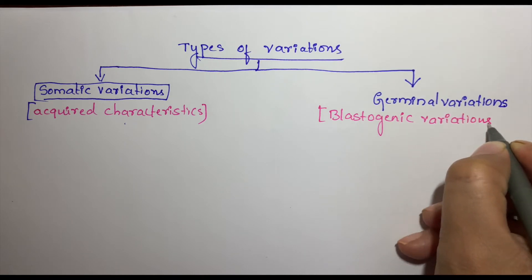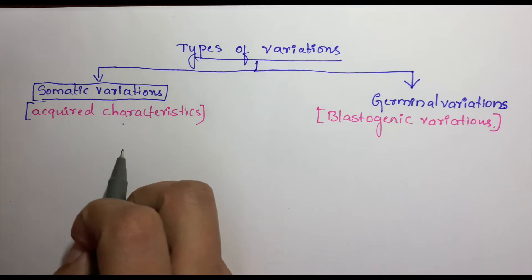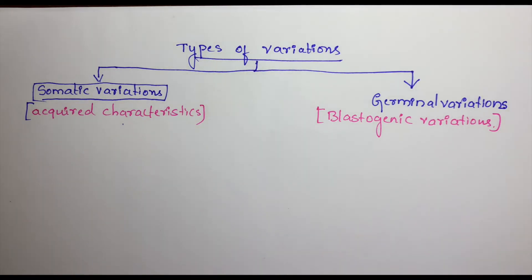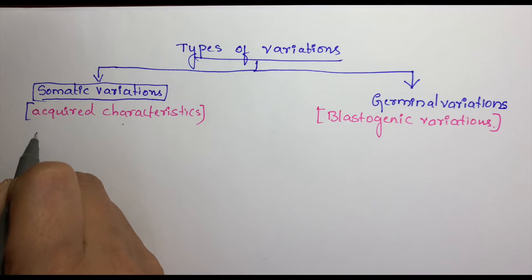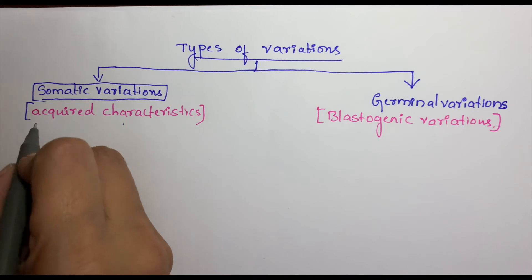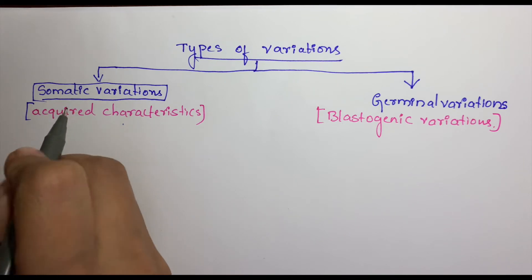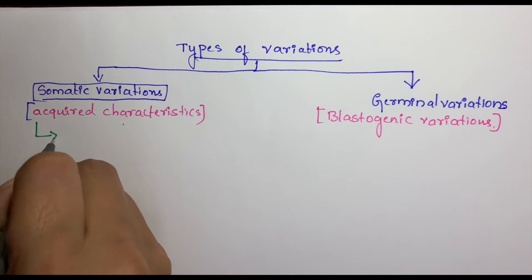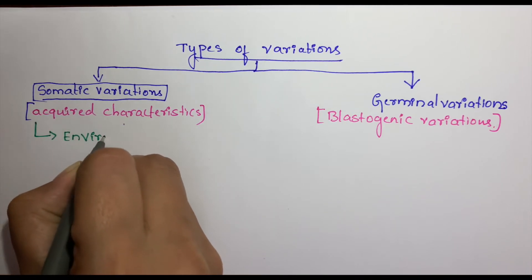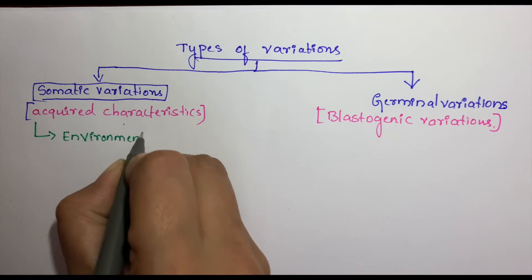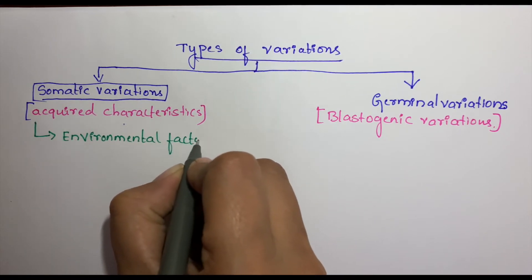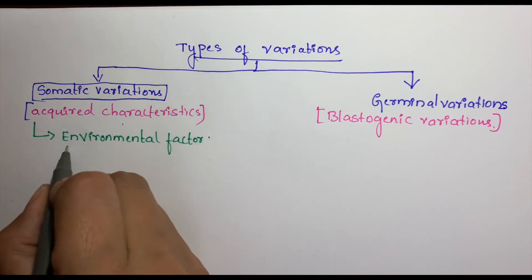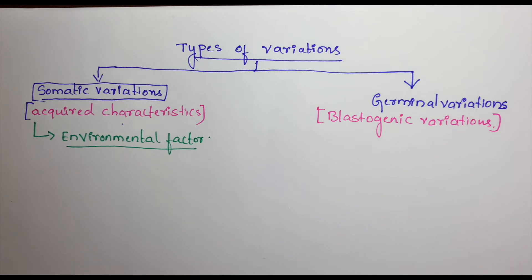Somatic characteristics are acquired by an individual during its lifetime and can be caused by three main factors. The first factor causing somatic variation is environmental factors — such as light, temperature, nutrition, wind, and water — which can bring about changes in plants as well as animals.